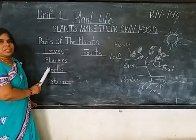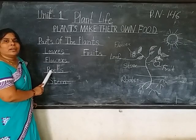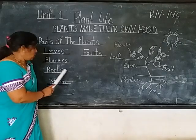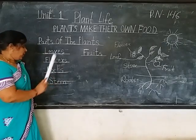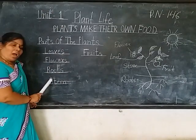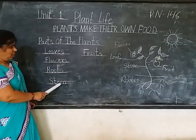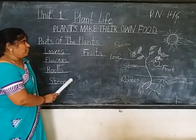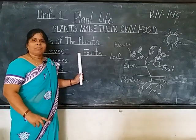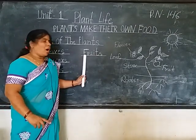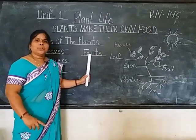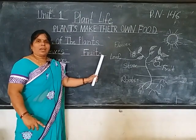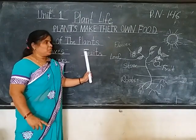Third: roots — R, O, O, T, S — roots. Stem — S, T, E, N — stem. Fruits — F, R, U, I, T, S — fruits.